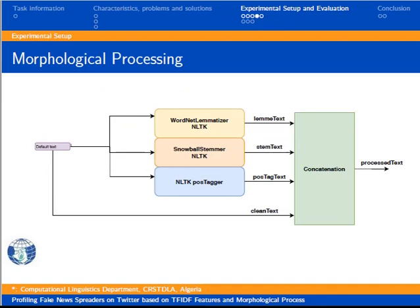In the second stage, we apply three morphological processing steps. The first is lemmatization using the WordNet lemmatizer. The second is stemming using the NLTK Snowball stemmer. The third is part-of-speech tagging using the NLTK POS tagger. Finally, we concatenate the four outputs — clean text, lemmatized text, stemmed text, and POS-tagged text.